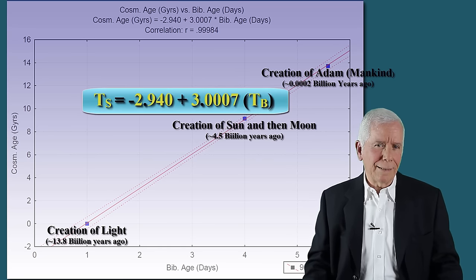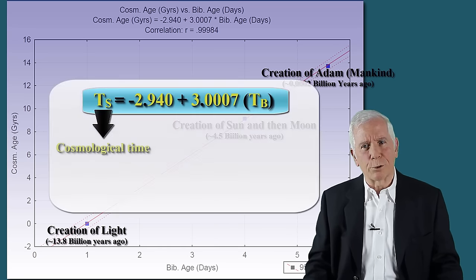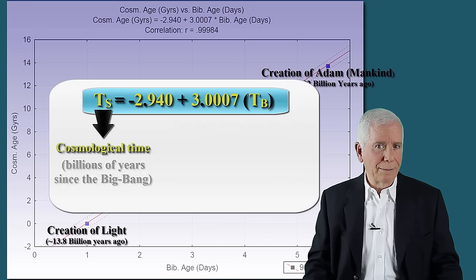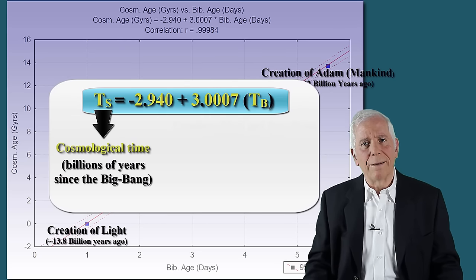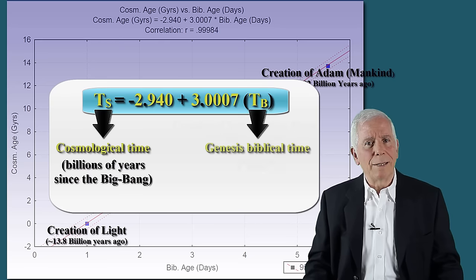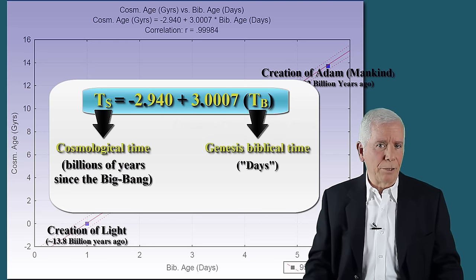In this equation, Ts is the scientific cosmological time in billions of years since the Big Bang, and TB is biblical time in days as described in Genesis.